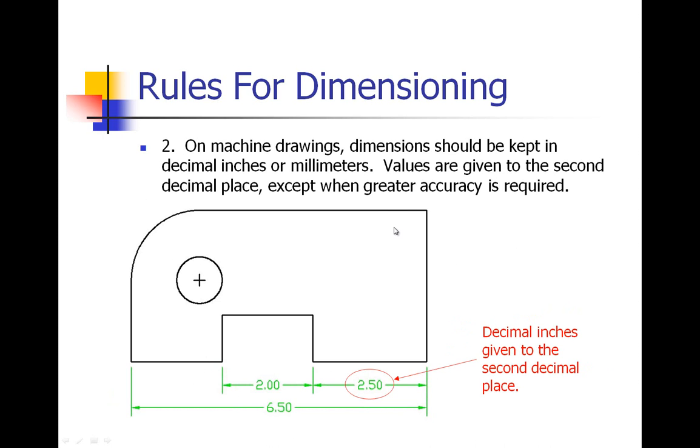Number two: on machine drawings which are mechanical type drawings, those are the drawings that we are doing in this course. Dimensions should be kept in decimal inches or millimeters if you are working in millimeters. Values are given to the second decimal place except where greater accuracy is required. If you are doing a drawing that you need to go to the thousandths or ten thousandths you need to give that information. For what we do in this class we are focusing on two decimal places. That is accurate enough. So as you can see here we have a dimension that is in decimal inches 2.50, and we have two places after the decimal.